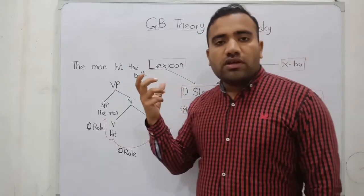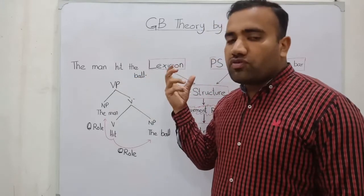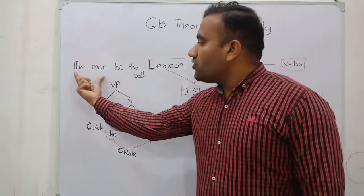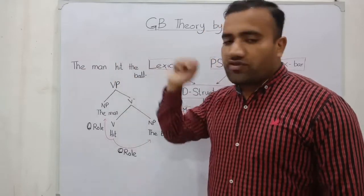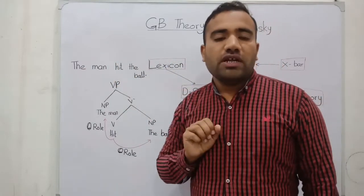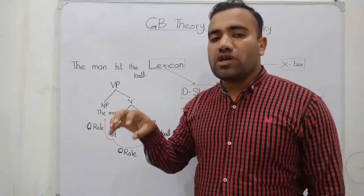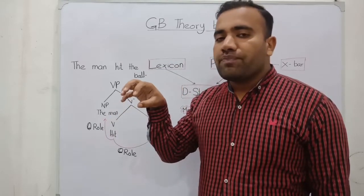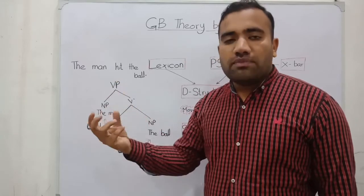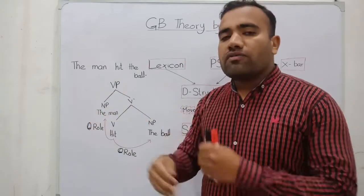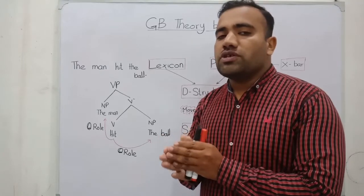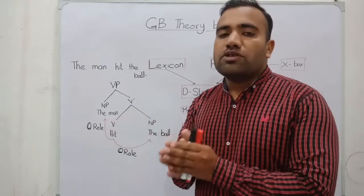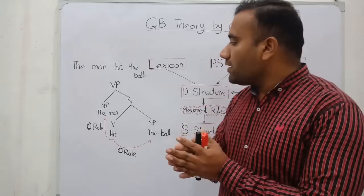If we take the PS rule, we can say that this is our NP and this is our VP, and this is our whole S. Because in PS rule we have already assumptions that the S consists of NP and VP. After accounting, we reach the X-bar theory, the elementary tree.